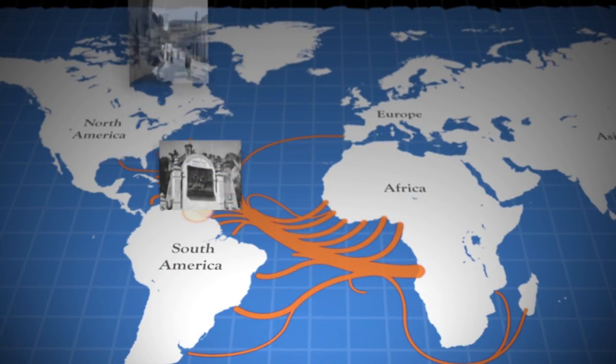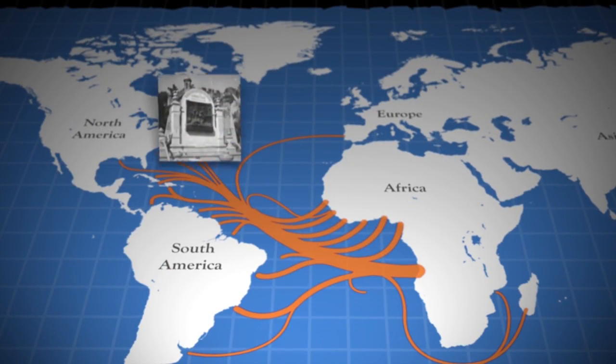How many people do you think ended up in the United States? I always thought that was the only place that they came, so I would say 90% anyway. Actually, 6% — so that's 94% of people of African descent that traveled throughout other parts. The largest community of people of African descent is actually in Brazil.